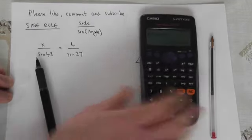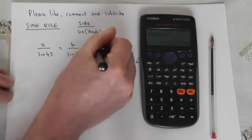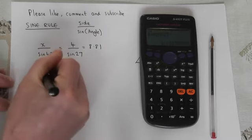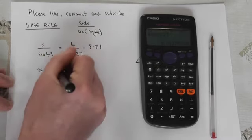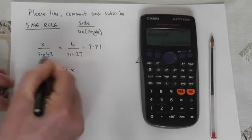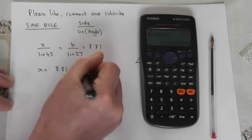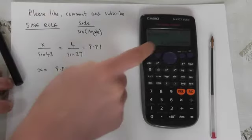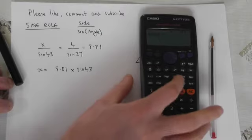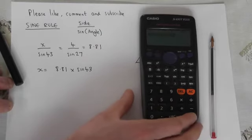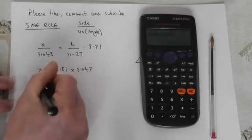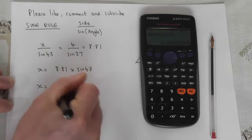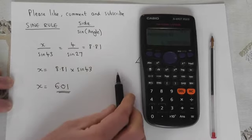This is 8.81 approximately. Then to find X all we do is we get this 8.81 and we multiply by the sine 43. The key point here is to stay accurate. 8.81 times that by the sine 43 and this gives us X equals 6.01.